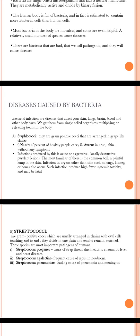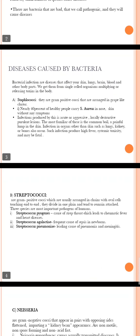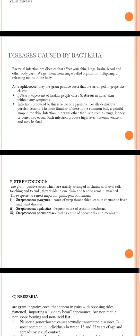The first bacteria is Staphylococci. They are gram-positive cocci arranged in grape-like clusters. Nearly 40% of healthy people carry Staphylococcus aureus in the nose and skin without any symptoms. Infections produced are acute or aggressive, locally destructive, and purulent lesions. The most familiar is the common boil, a painful lump in the skin. Infections in organs other than skin, such as lungs, kidneys, or bones, can also occur, producing high fever, systemic toxicity, and may be fatal.